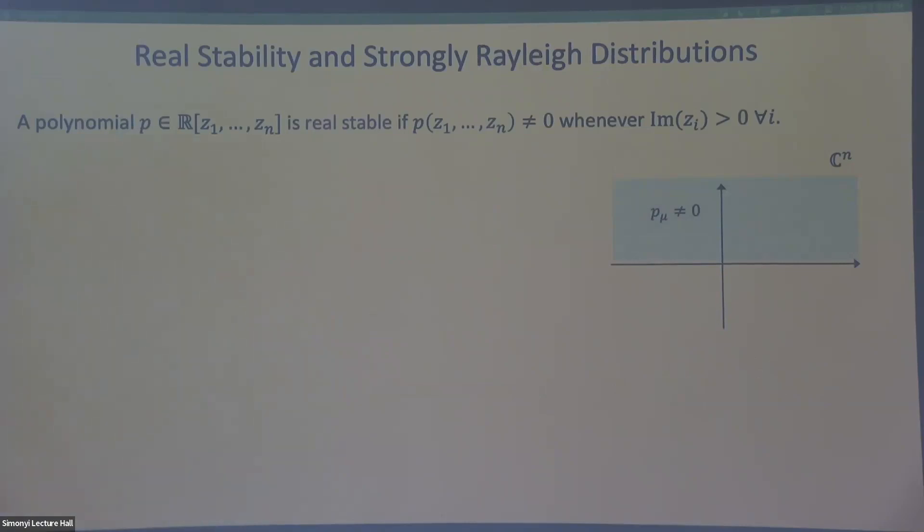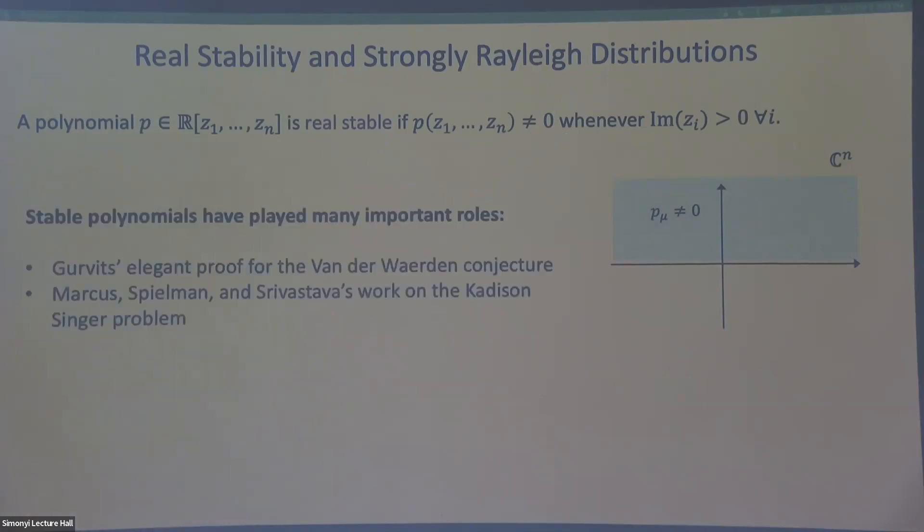And a very important definition in this arena is real stability. So we say a polynomial is real stable if it has real coefficients, and the polynomial never vanishes when I plug in values with all positive imaginary part. So in other words, it has no zeros in the upper half of the complex plane. And this is an important class of polynomials. It's played many critical roles. For example, in Gurvits's proof of the Van der Waerden conjecture, and Marcus, Spielman, and Srivastava's recent work on the Kadison-Singer problem. These are powerful. This is a powerful idea to look at these things.